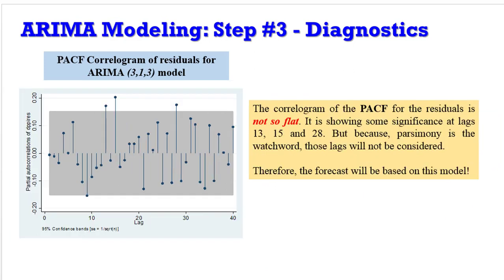Let's look at the PACF. This is the PACF correlogram for the residuals for ARIMA 3,1,3 model. It is not so flat because it is still showing some significance at lags 13, 15, and 28. You can see here, they are outside the 95% confidence interval, indicating that they are significant. But because parsimony is a watchword, those lags will not be considered and this model will not be re-estimated. Therefore, the forecast will be based on ARIMA 3,1,3 model.